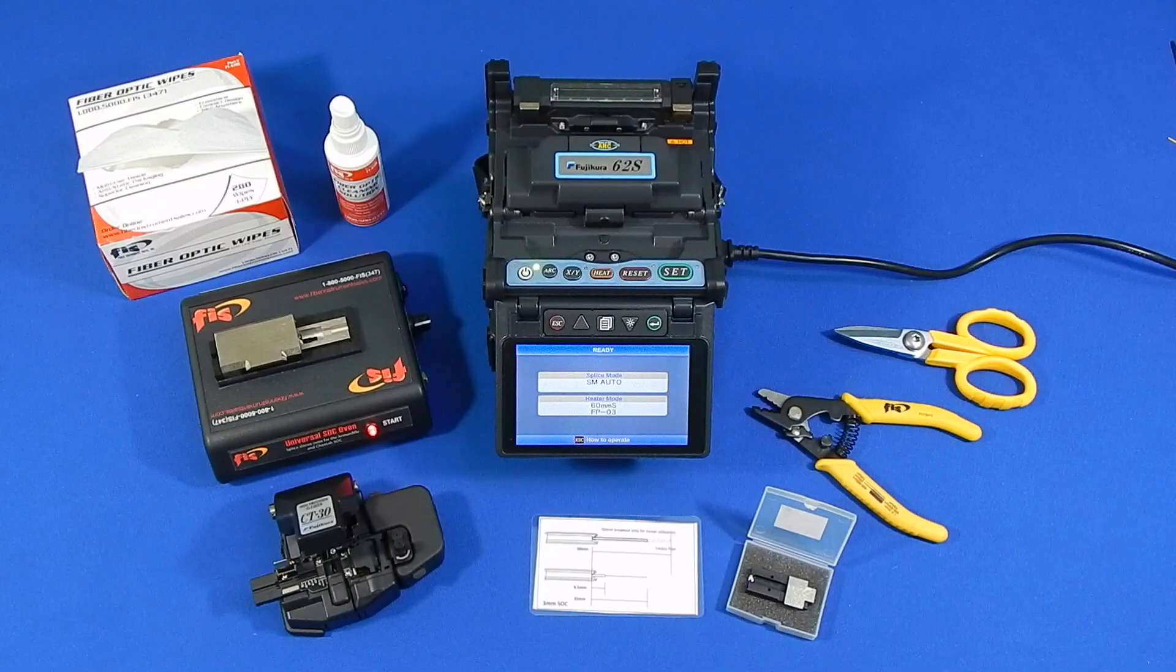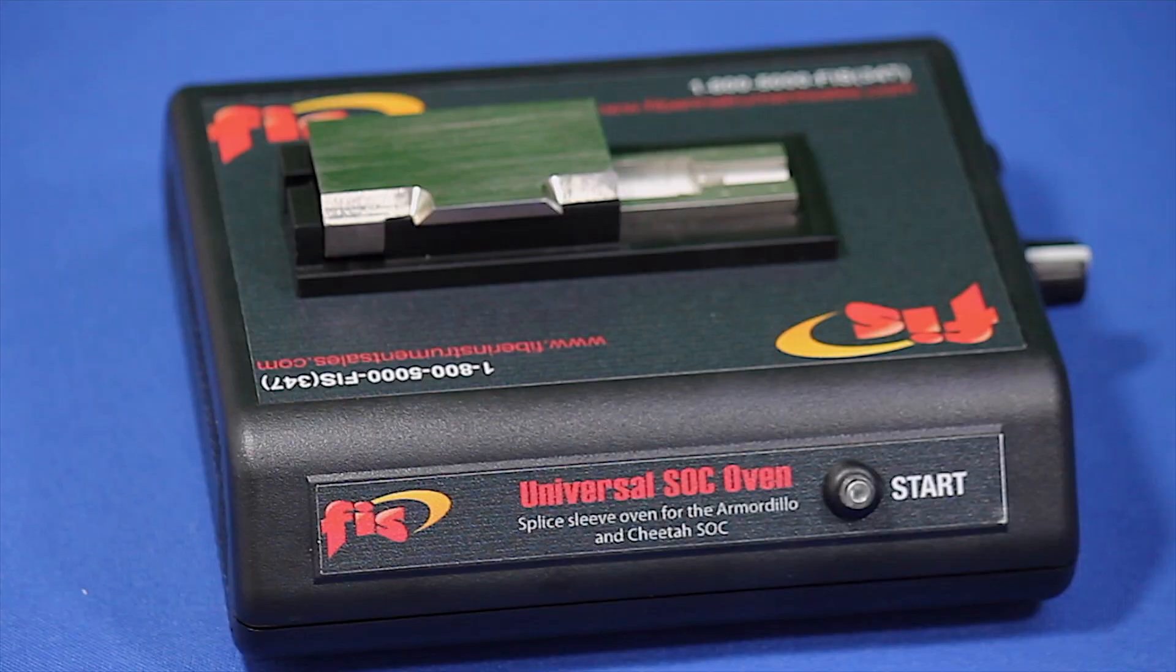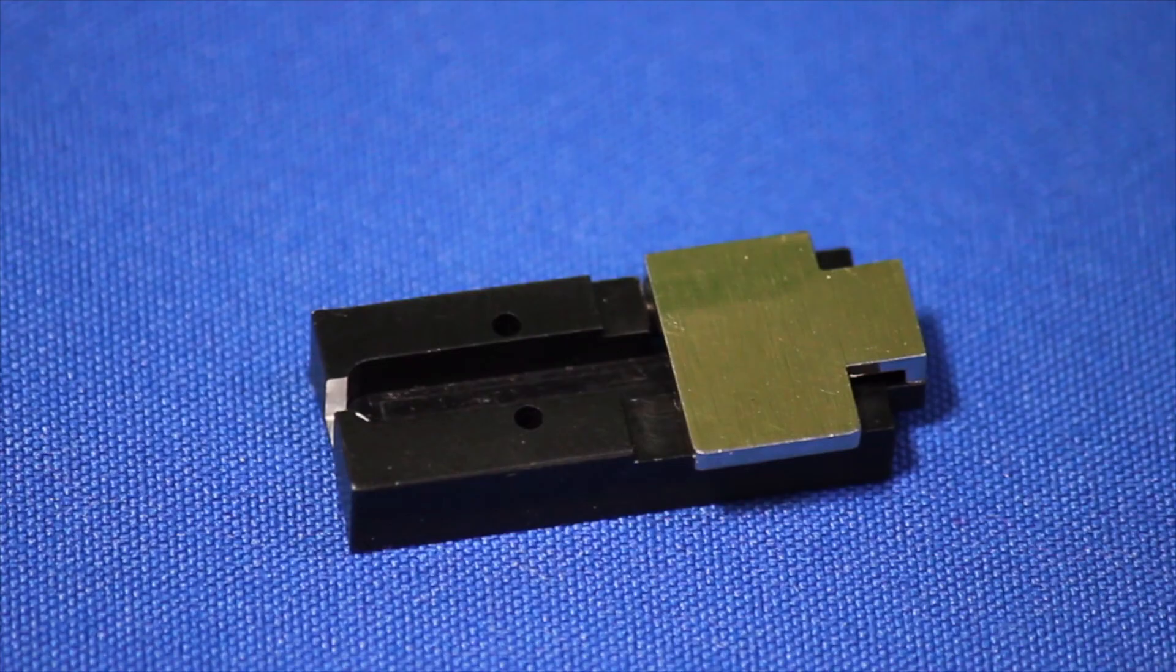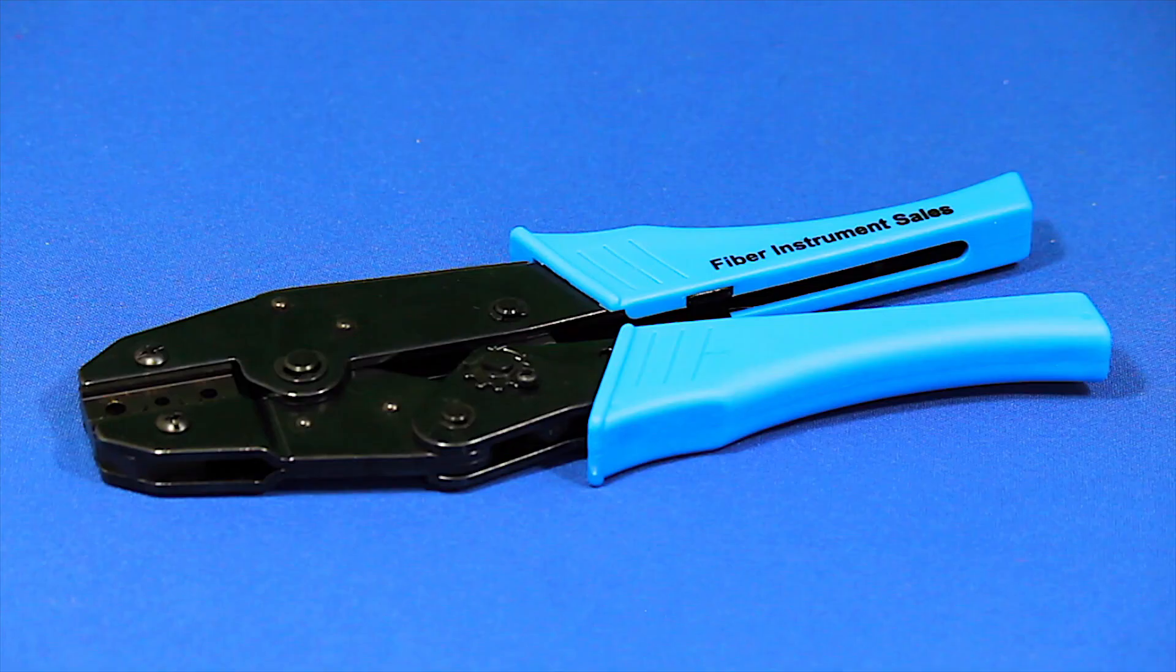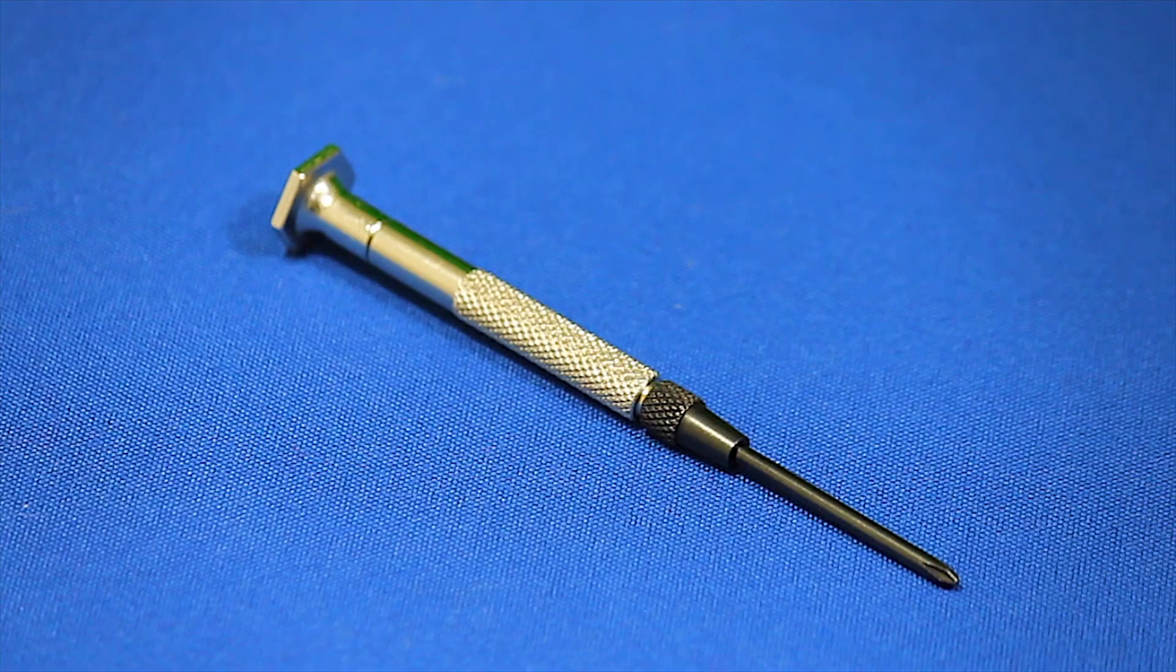Here are the items needed: Fujikora CT-30 Cleaver, FIS Universal SoC Oven, SoC Holder, 3mm Cordage Holder, Crimp Tool, Kevlar Shears and Tri-Hole Stripper, Cleaning Solution and Wipes, and Screwdriver.